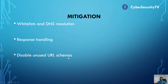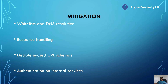Third, disable unused URL schemas. If only HTTPS is required, you should not enable FTP, file, HTTP, or other protocols — block or disable those schemas if not required. The last mitigation is authentication on internal services. Even if all system components are within your trust boundaries, ensure every request from internal resources is authenticated and authorized, following the least privilege model. If the application only requires read-only access, then only give read-only access.